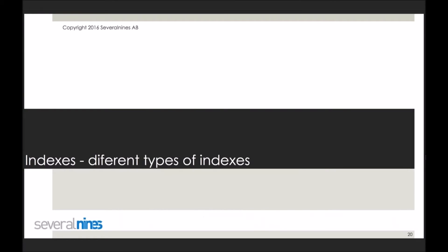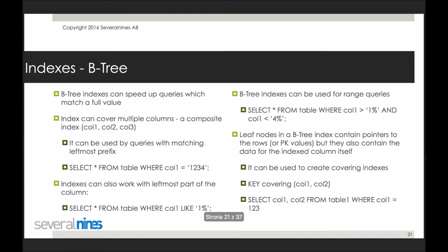Let's talk about the most popular types of indexes in MySQL. B-tree indexes can speed up queries which match a full value — for example, SELECT something FROM table WHERE column = 1. Indexes can cover multiple columns — the so-called composite index. Such indexes can be used by queries matching the leftmost prefix. So if I have an index on three columns (column1, column2, column3), a query with conditions on column1 and column2 can use this index because the leftmost prefix contains values for column1 and column2.